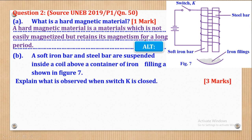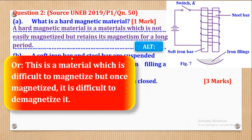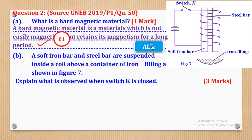A hard magnetic material is a material which is not easily magnetized but retains its magnetism for a long period. Alternatively, you can say it is a material which is difficult to magnetize but once magnetized it is difficult to demagnetize. Either definition earns you one full mark.